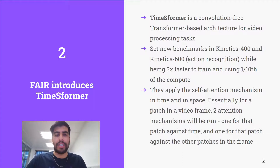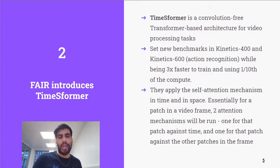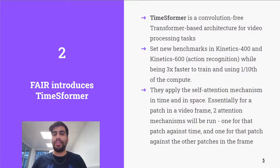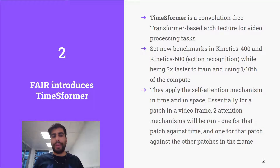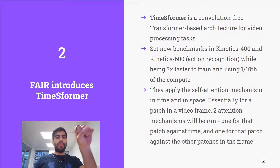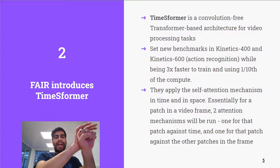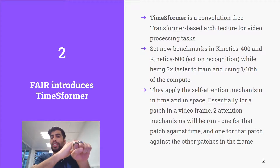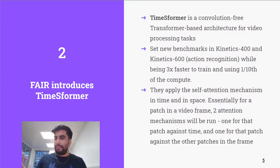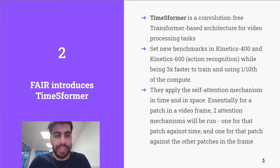They do have a blog post which dives into the details. At a high level, the self-attention mechanism is applied in both the time domain and the space domain. So for a given video frame, which we can break up into sub-regions or patches, two attention mechanisms will be run: one for a given patch across the full time of the video, and another for that patch across all patches in the current frame. Slightly complicated, I know — read the blog post for more details if you're interested.